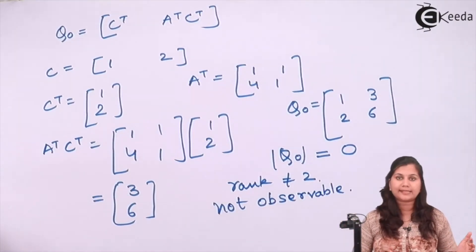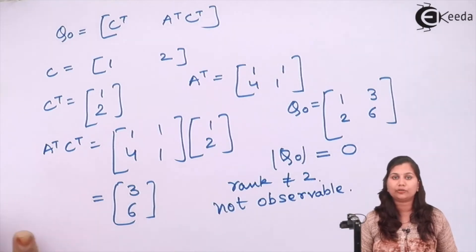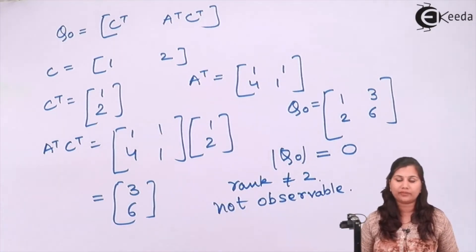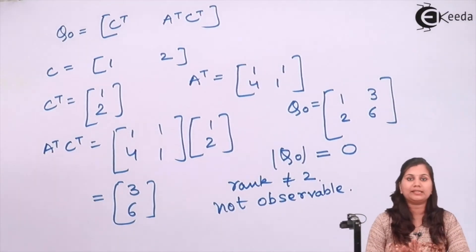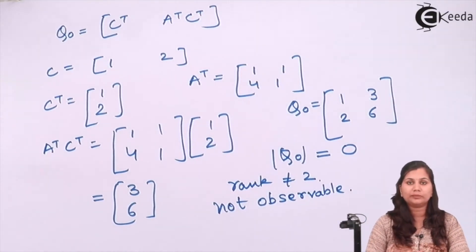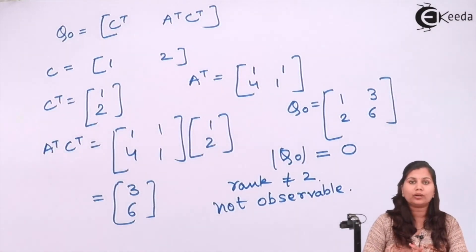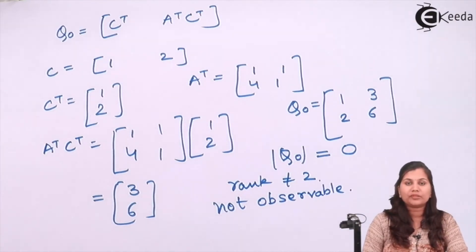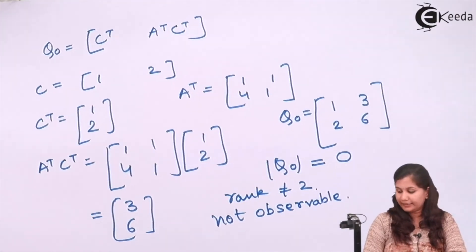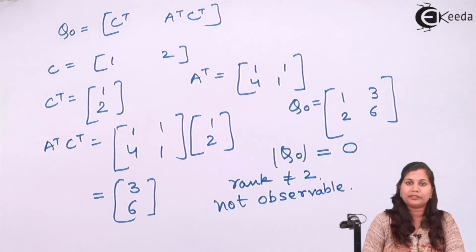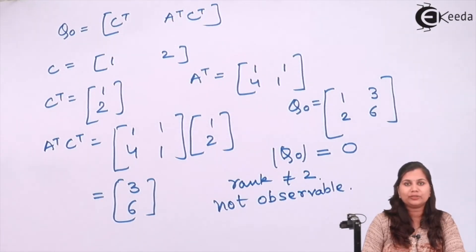So we have found that the second system is neither controllable nor observable. In this way, if we are given the values of matrices A, B, C, we can check the controllability and observability of the system by checking the rank of the QC controllability test matrix and the Q0 observability test matrix. We can check their ranks and determine the controllability and observability of the system. I hope this problem is clear to you. Thank you.